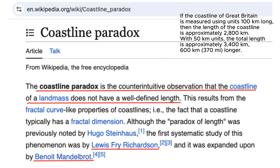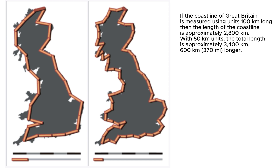the paradox demonstrates that as we use smaller measuring units, the total length of a coastline increases, potentially without bound. Consider Britain's coastline. When measured with a 100 km ruler, it's about 2,800 km long.